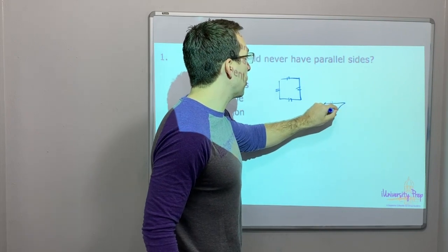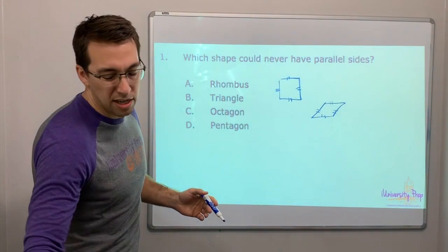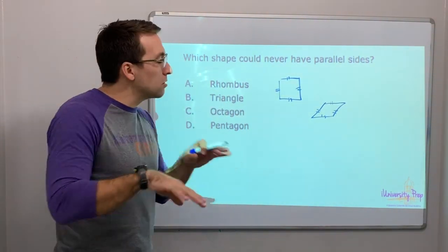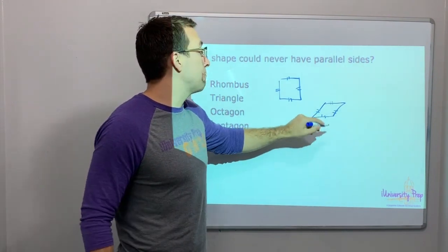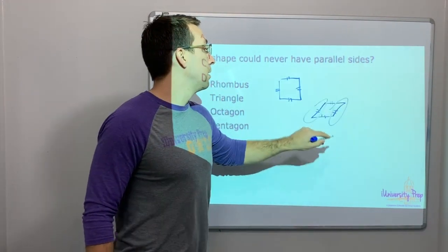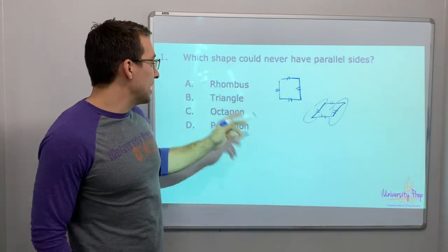And they're all the same length, but the angles aren't 90 degrees. A rhombus is a tilted square. The angles are not 90, but you could have parallel lines. These could be parallel, and then the opposite also could be parallel. A triangle?